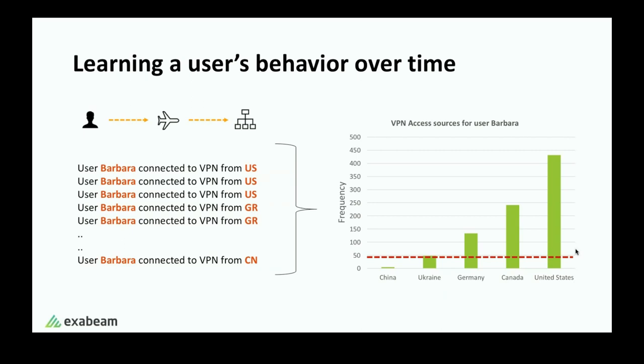Ukraine, in this case, is kind of borderline. I can claim that she's right on the threshold that might indicate that this is a bit abnormal for her. She did connect from Ukraine, but it's not trivial for her. China, in this case, is very much an outlier. We can definitely see that she only connected once before in China, and that might have been a problematic login. That's definitely an anomaly for Barbara to come from China.